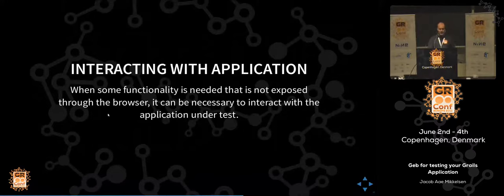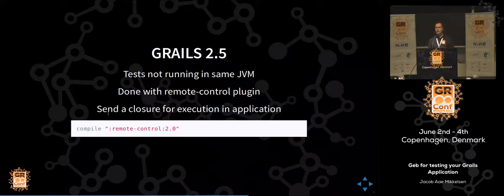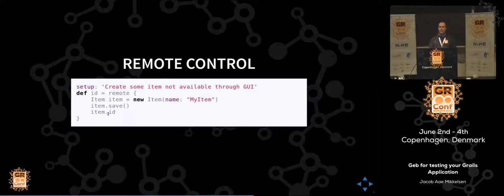How can we interact with the application we're testing? Sometimes not everything is exposed through the web API — we may need to generate test data or mess up some state. In Grails 2.5, this is done through the remote plugin. The tests and the application run in separate JVMs, so there are real tight limits. The remote control plugin gives you a remote closure — you send a closure to your application, have it executed there, and it can return results. It has some limitations: it needs to be serializable, both the closure and especially what you send back.